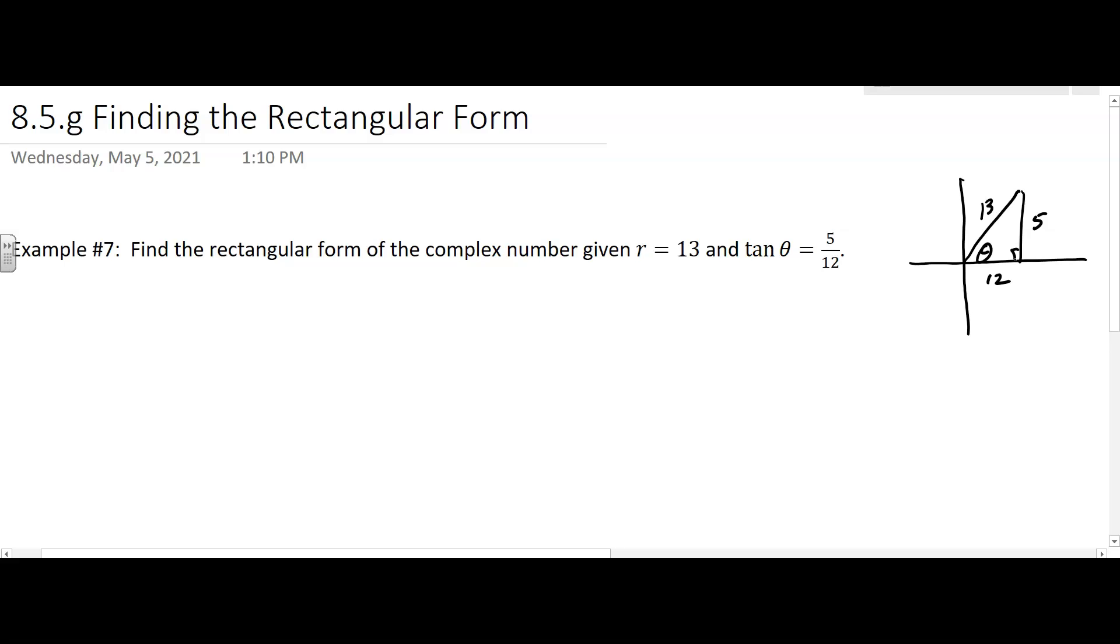Now you might have a question: tangent is positive in the first quadrant, but it's also positive in the third quadrant. How do I know which one? I don't have a good answer for that. I had the same question. I'm just going to assume they meant to tell me that theta is in quadrant one, so we'll just go with that.